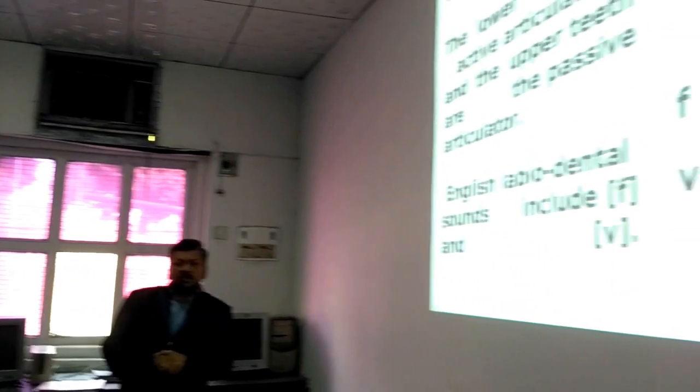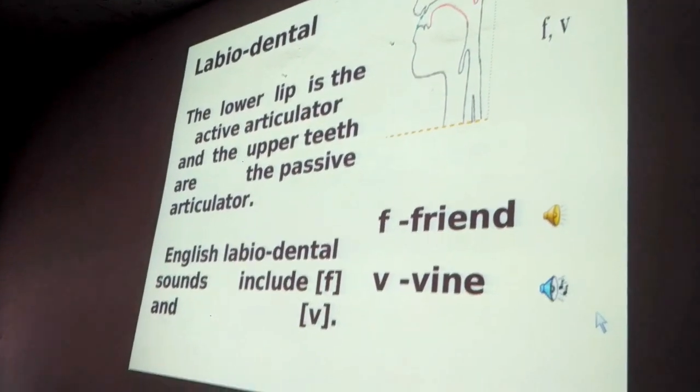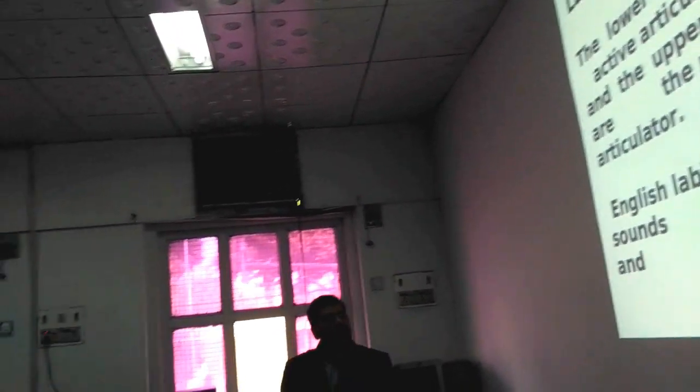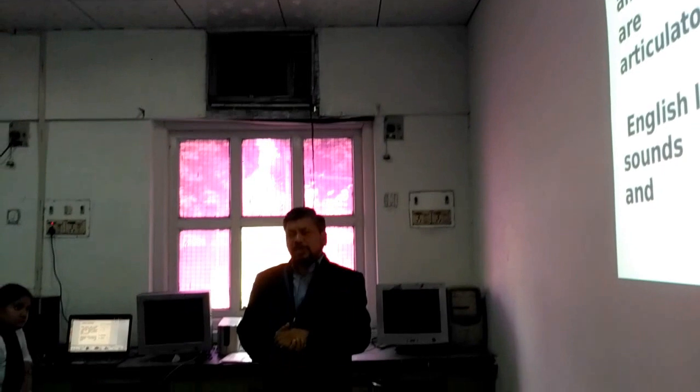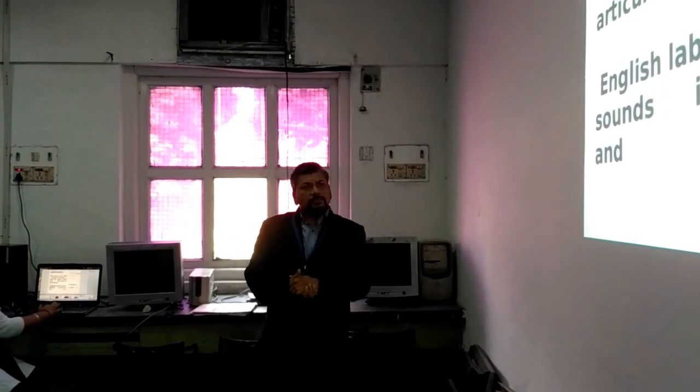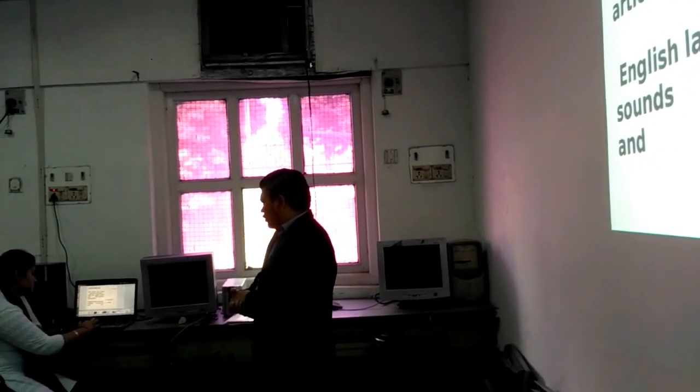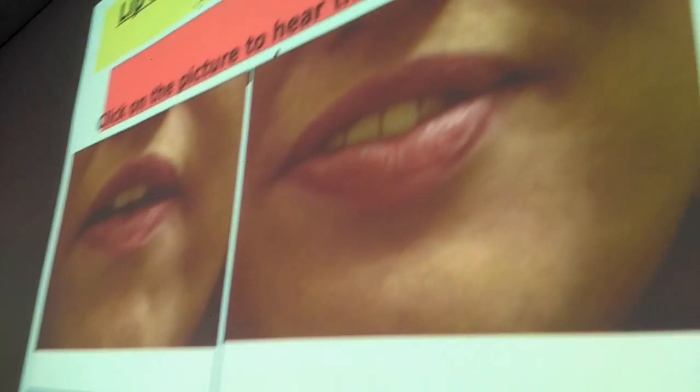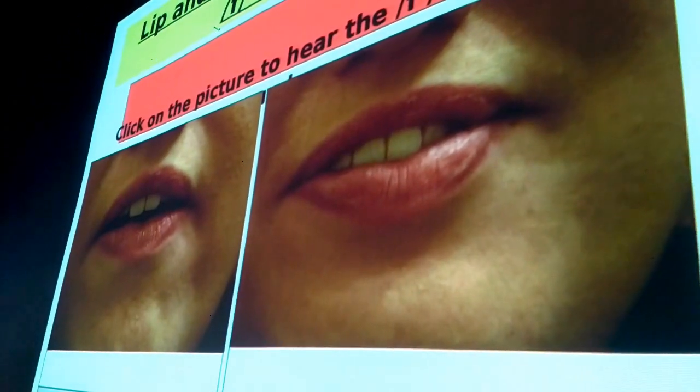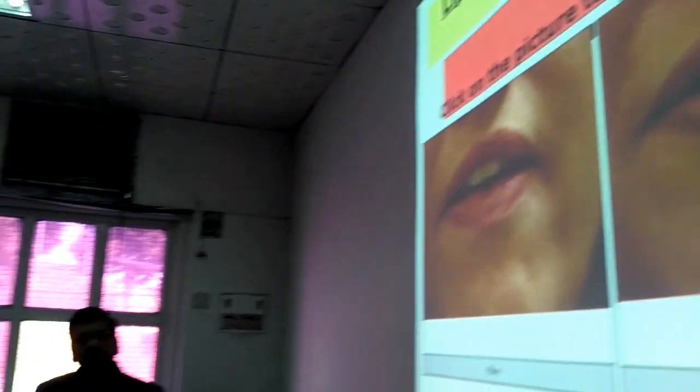Next category of consonant sound is labiodental. Then lower lip is the active articulator and upper teeth are the passive articulator. English labiodental sounds include F and V. Then you can see the sound production and mouth formation.